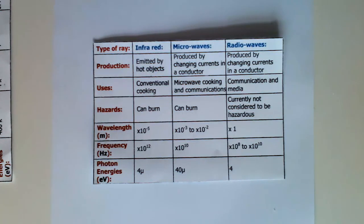Microwaves, produced by changing current in a conductor, uses microwave cooking and communications, hazards can burn, wavelength times 10 to the minus 3 to 2 times 10 to the minus 2, frequency times 10 to the 10th, and photon energies 40 mu.